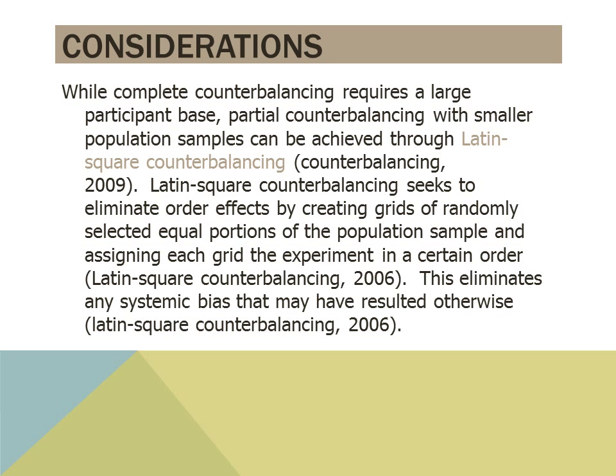While complete counterbalancing requires a large participant base, partial counterbalancing with smaller populations can be achieved through Latin square counterbalancing. Latin square counterbalancing seeks to eliminate order effects by creating grids of randomly selected portions of the population sample and assigning each grid the experiment in a certain order. This eliminates any systemic bias that may have resulted otherwise.